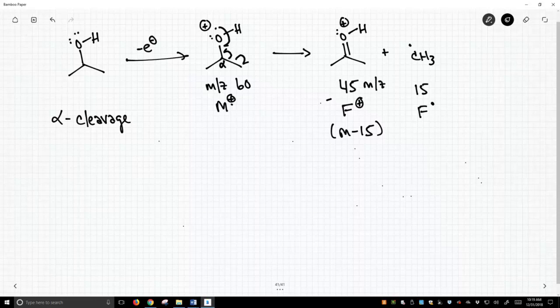Notice the fragment radical doesn't have a mass to charge value because it doesn't have a charge. It's neutral. So this is not observed in the spectrometer, but what we see is a peak of 45. This is the classic alpha cleavage pathway.